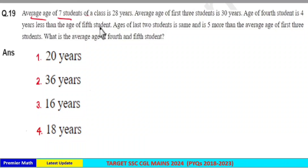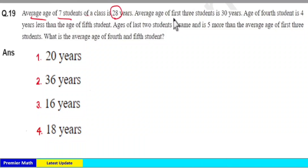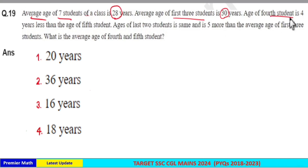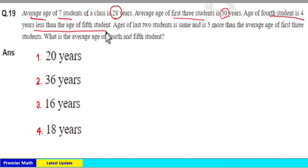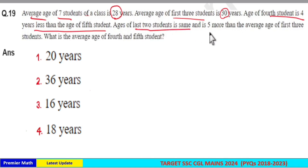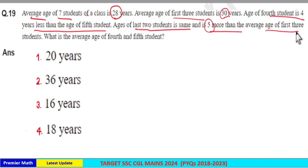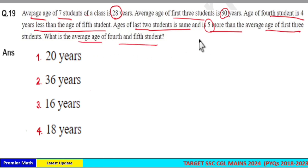The average age of 7 students of a class is 28 years. The average age of the 1st to 3rd students is 30 years. The age of the 4th student is 4 years less than the age of the 5th student. The ages of the last 2 students are the same and are 5 more than the average age of the 1st to 3rd students. What is the average age of the 4th and 5th students?